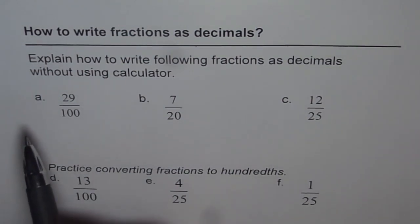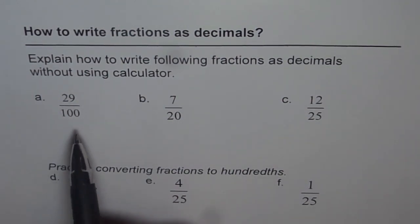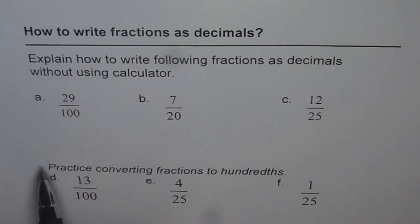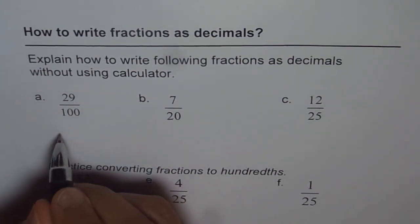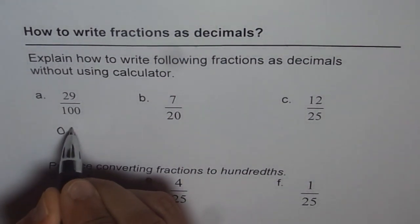Let's start with the first one: 29 over 100. How will you read this? 29 hundredths. When we say 29 hundredths, that means we have two decimal places. So it could be written as 0.29.